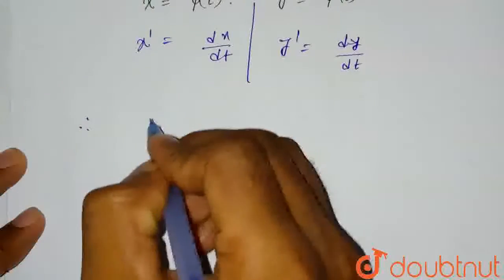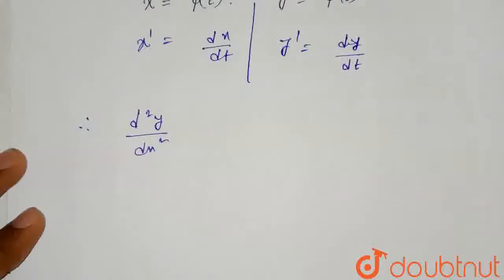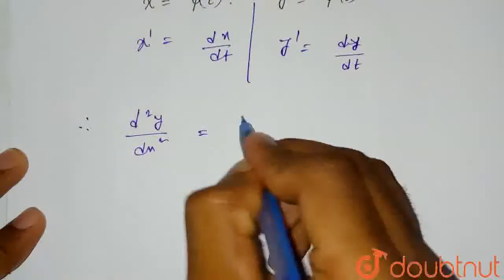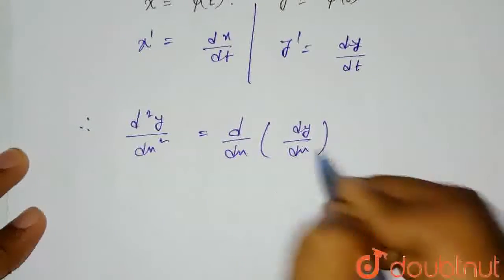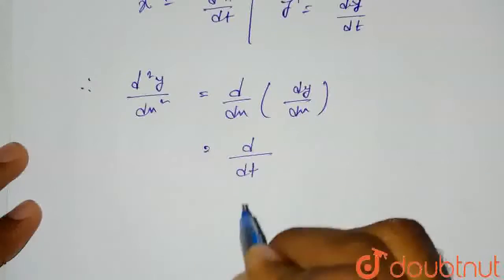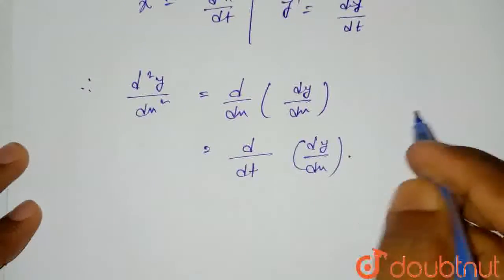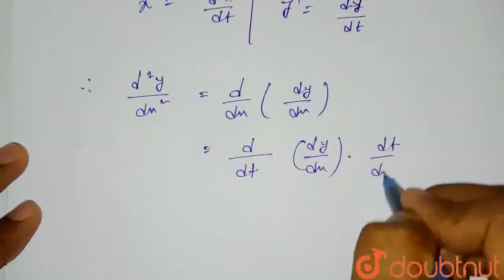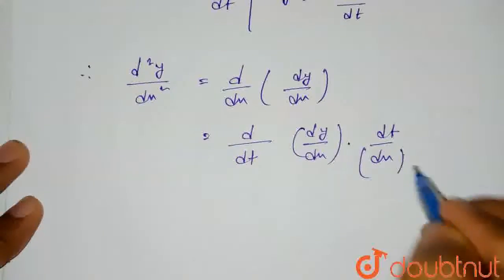Now what we have to find out? We have to find the general value for d²y/dx². This equals d/dx of (dy/dx). So we can write this as d/dt of (dy/dx) multiplied by dt/dx. We did nothing, we just multiplied and divided by dt.